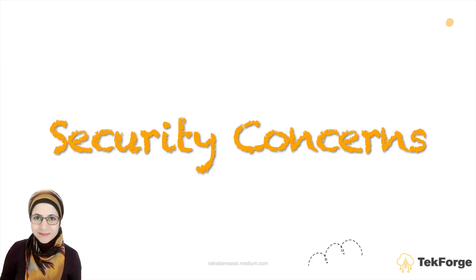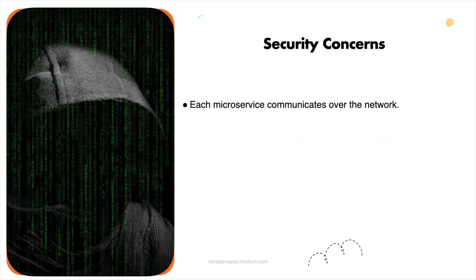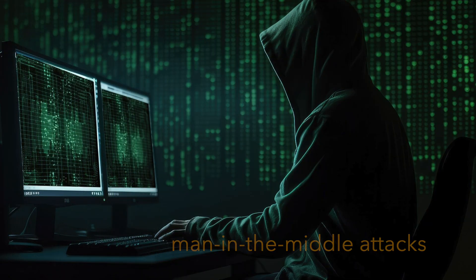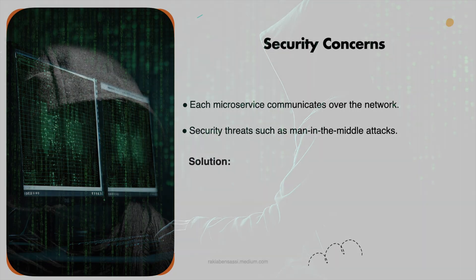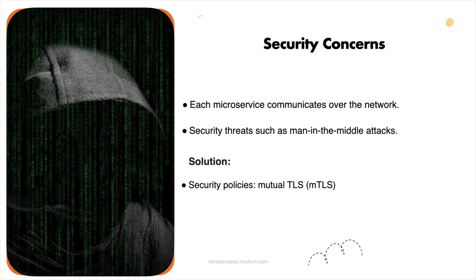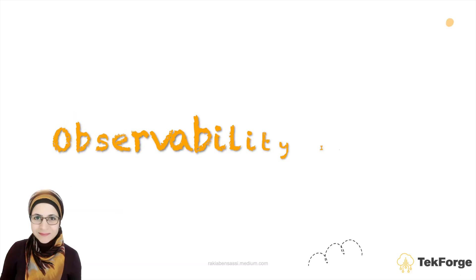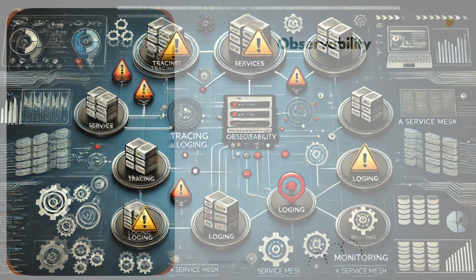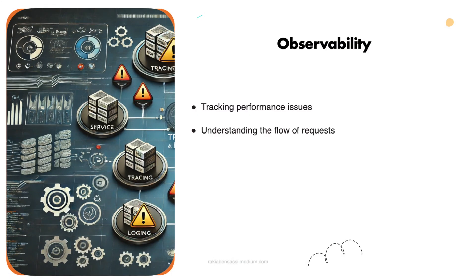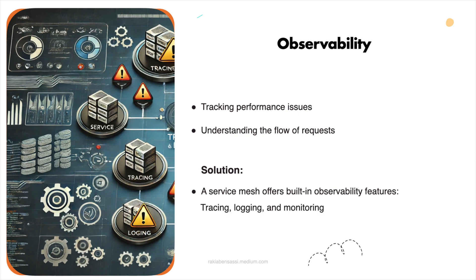Security concerns: each microservice communicates over the network, making it susceptible to security threats such as man-in-the-middle attacks. A service mesh can enforce security policies like Mutual TLS (MTLS) for encrypted communication between services. MTLS stands for Mutual Transport Layer Security or Mutual Authentication. Observability issues: with multiple services interacting, tracking performance issues and understanding the flow of requests becomes difficult. A service mesh offers built-in observability features including tracing, logging, and monitoring to help track and troubleshoot issues.